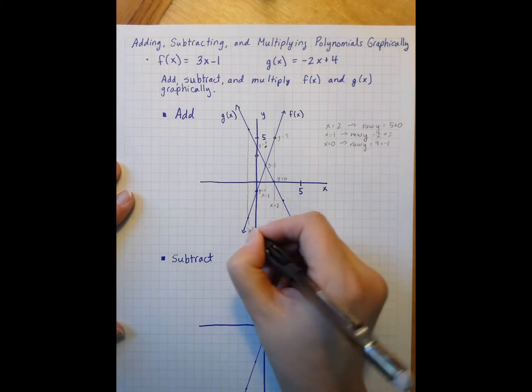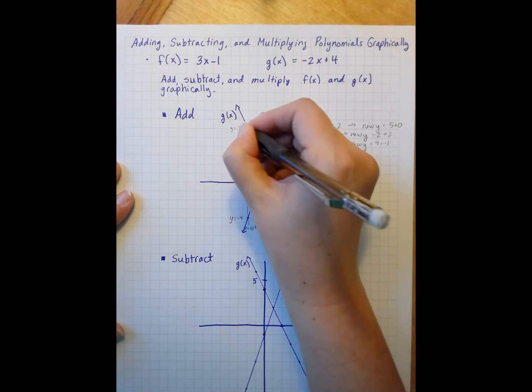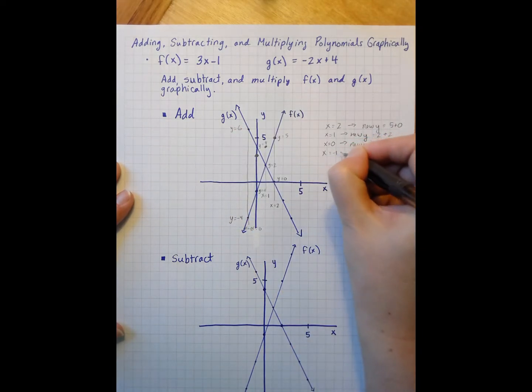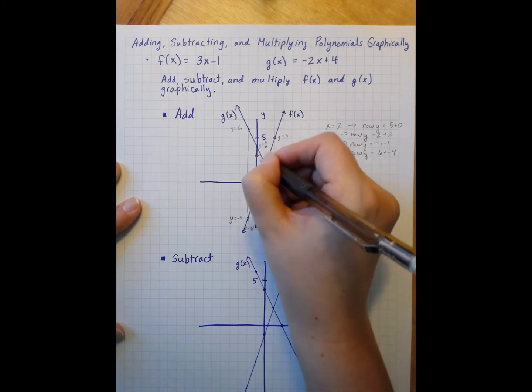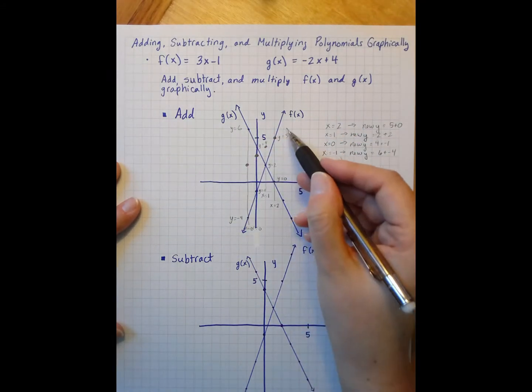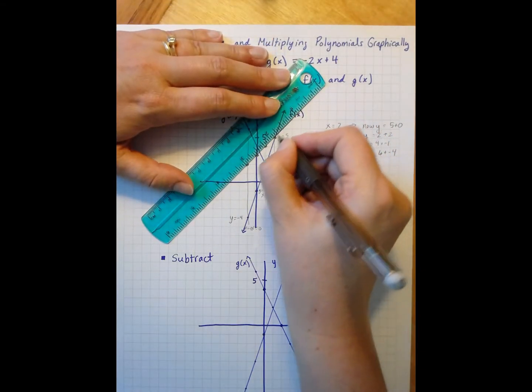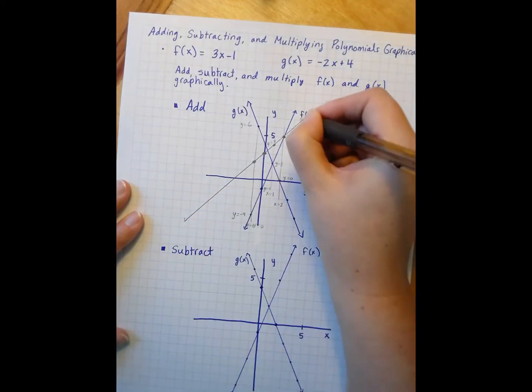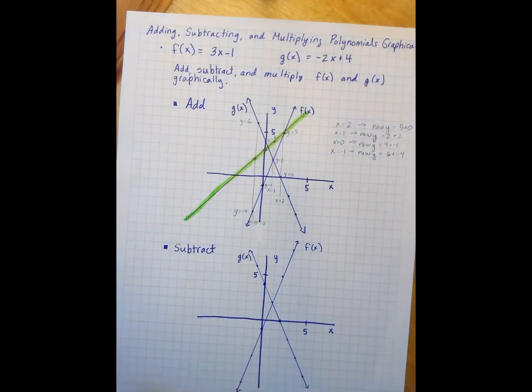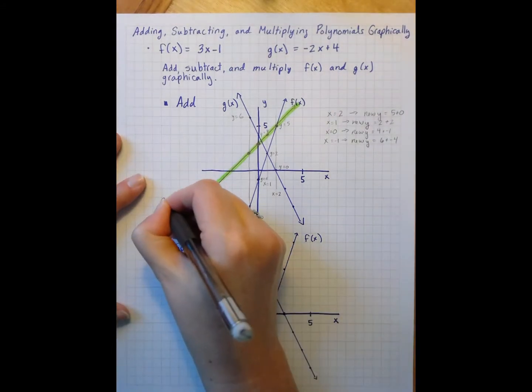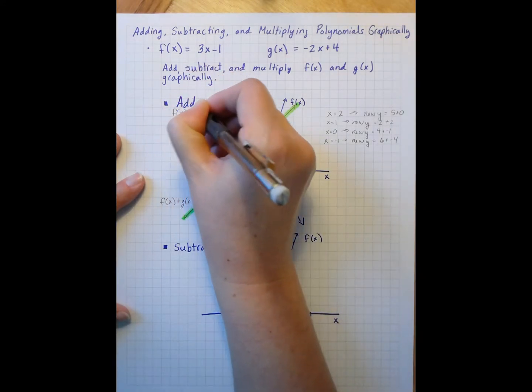I'm beginning to see that shape of that new combined f of x plus g of x function right here. So I'll do one more. When I have x equals negative 1, I have a y of negative 4 and a y of 6. So when x equals negative 1, my new y is going to equal 6 plus negative 4, which is positive 2. And now I'm really seeing where that new line sits. So I can connect my dots here.